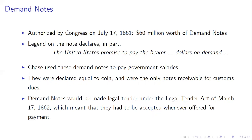A year later, they're made legal tender under the Legal Tender Act of March 1862, meaning they have to be accepted whenever offered for payment. If you take out a U.S. dollar and look at it, you'll see it says 'this note is legal tender for all debts, public and private.' What it means to be legal tender is that it must be accepted as a means of payment.